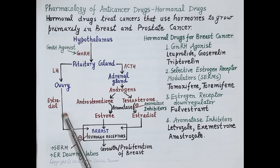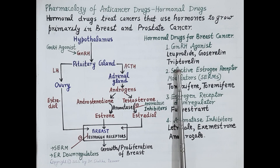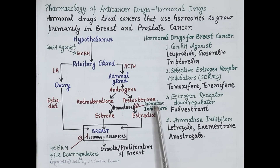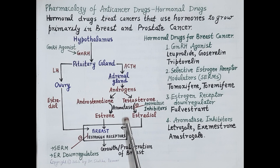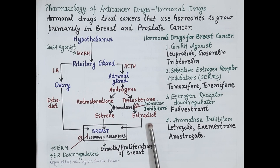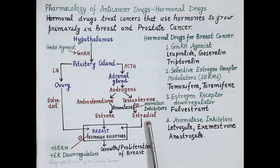GnRH agonists are very effective in pre-menopausal women with breast cancer. The drugs include leuprolide, goserelin, and triptorelin. Another category are aromatase inhibitors — as discussed, the aromatase enzyme converts androgens produced by the adrenal gland into biologically active estrogens, estrone and estradiol. Drugs like letrozole, exemestane, and anastrozole prevent this conversion, reducing estrogen levels. This therapy is very effective in post-menopausal women with non-functional ovaries.